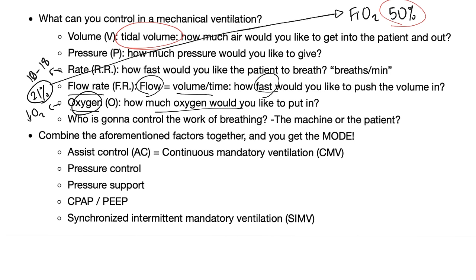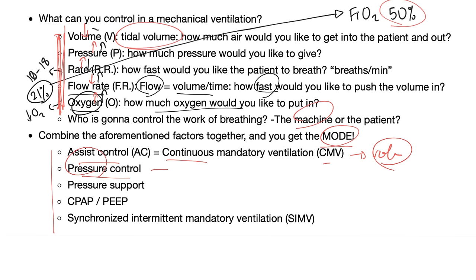Combine any combination of these parameters and you get something called a mode — which is why there are an infinite number of possibilities. Here are some famous modes: assist control or continuous mandatory ventilation (volume control); pressure control (you control pressure instead of volume); pressure support (slightly different from pressure control); CPAP or PEEP; and synchronized intermittent mandatory ventilation, which is an intermittent ventilation mode.